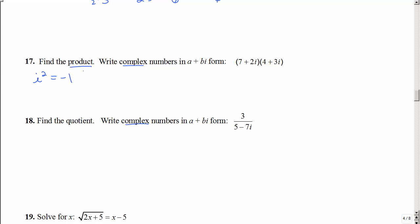So find the product. That means I just multiply, so I'm just going to FOIL it out. 7 times 4 is 28, 7 times 3i, 2i times 4, and 2i times 3i is positive 6i squared.